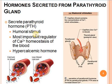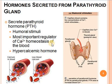Parathyroid hormone is secreted in response to humoral stimuli. When the amount of calcium decreases in the capillary blood, it stimulates the parathyroid glands to secrete parathyroid hormone. Parathyroid hormone is the most important regulator of calcium homeostasis of the blood. It is also known as the hypercalcemic hormone, which regulates and increases the amount of calcium within the blood.